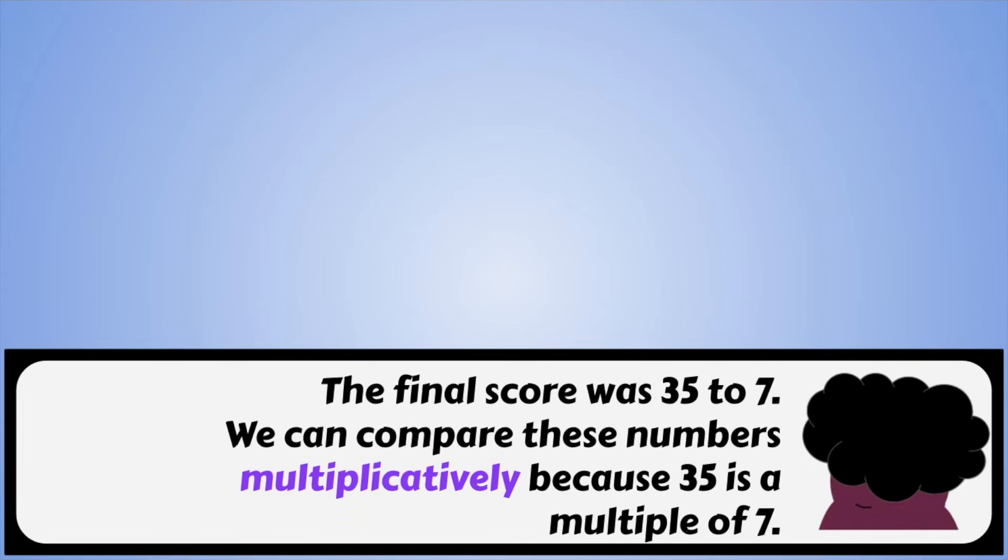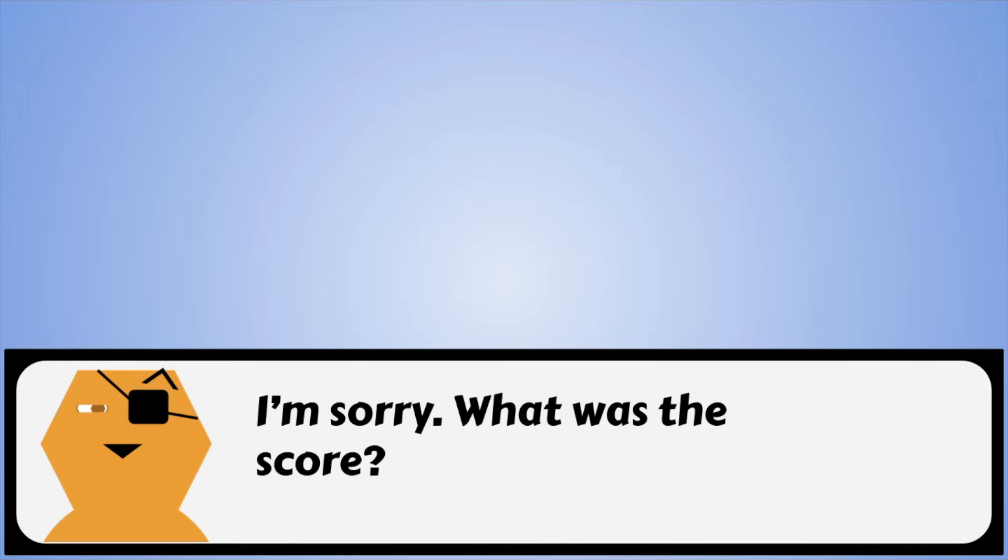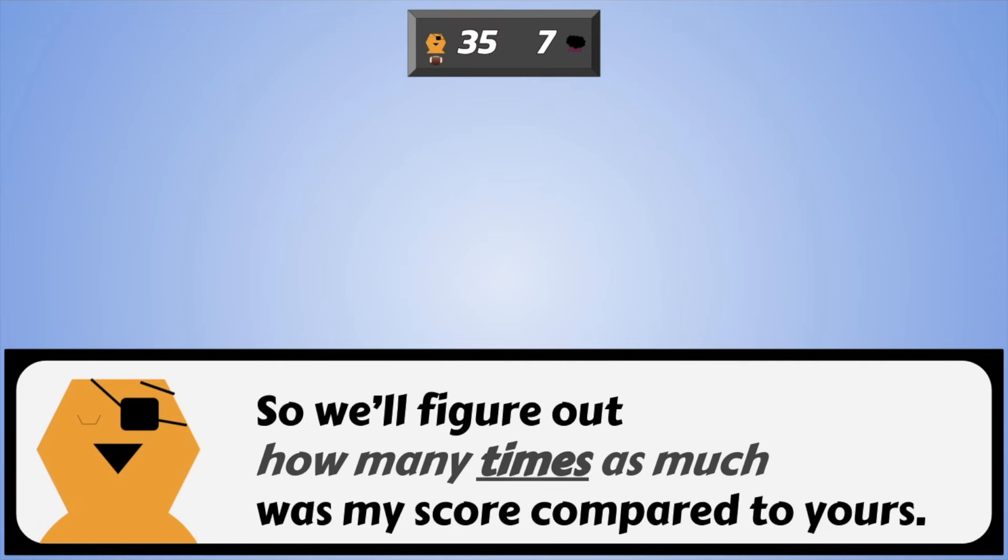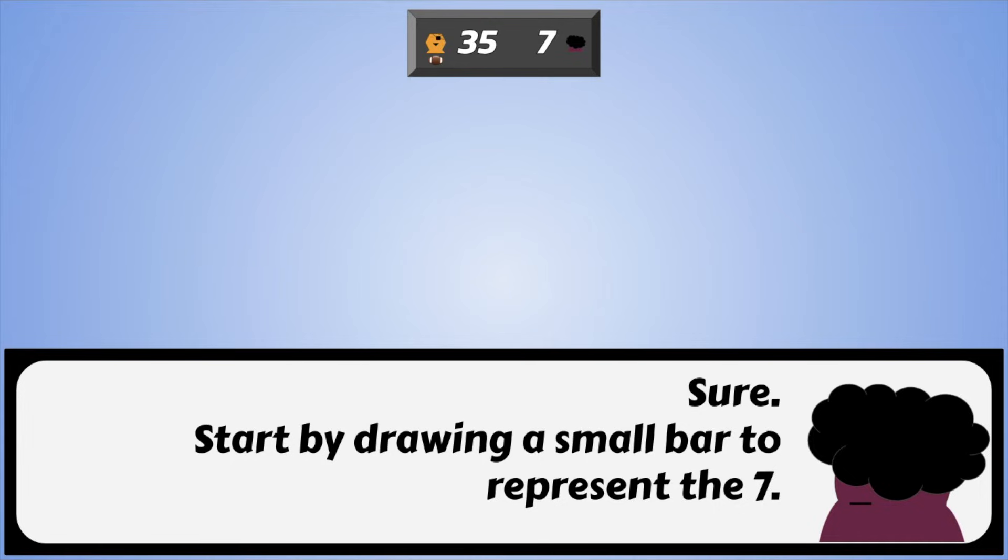The final score was 35 to 7. We can compare these numbers. I'm sorry, what was the score? The final score was 35 to 7. Let's compare these numbers multiplicatively. So, we'll figure out how many times as much was my score compared to yours.